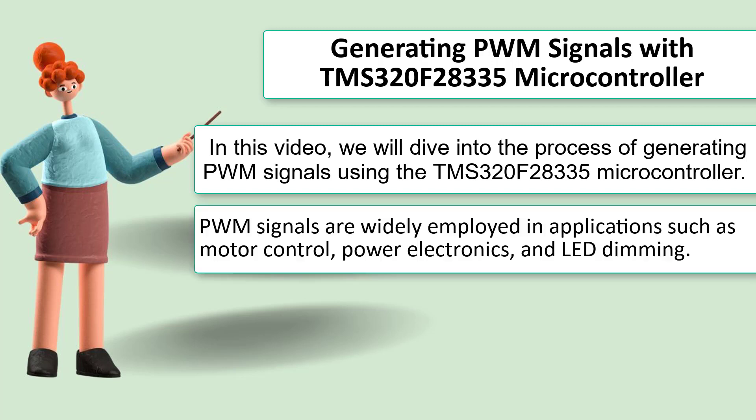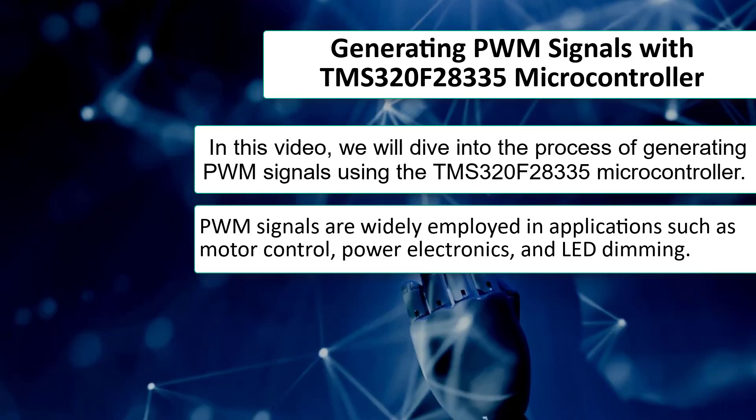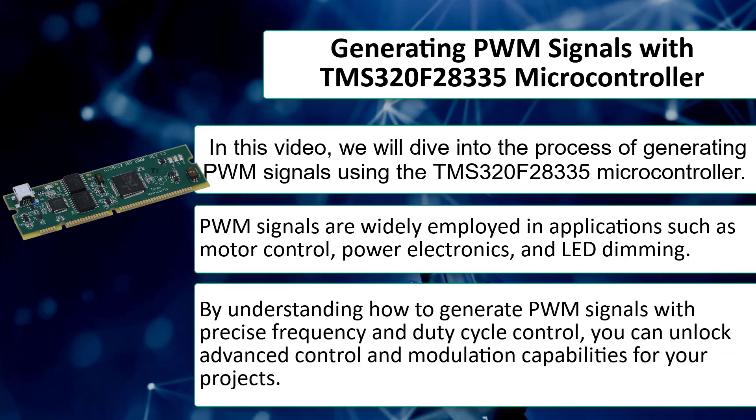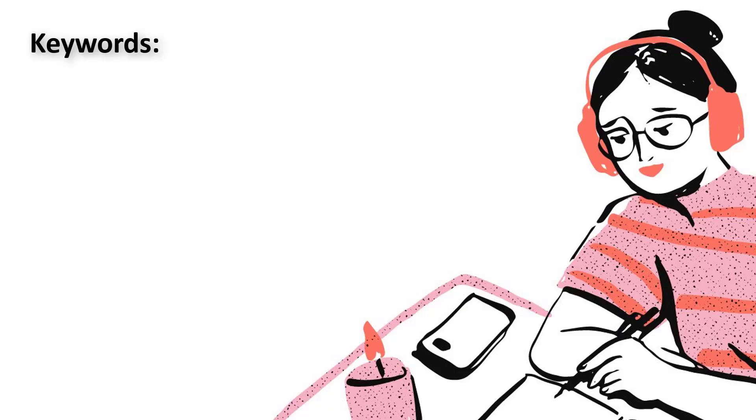PWM signals are widely employed in applications such as motor control, power electronics, and LED dimming. By understanding how to generate PWM signals with precise frequency and duty cycle control, you can unlock advanced control and modulation capabilities for your projects.